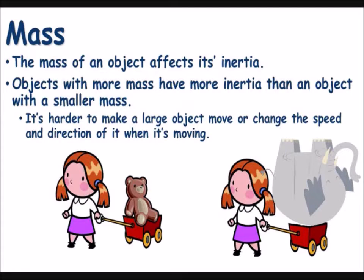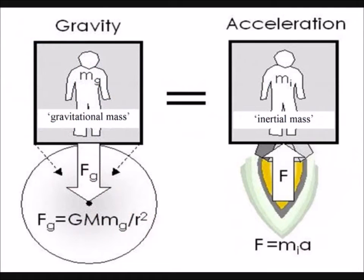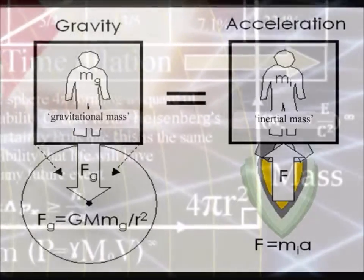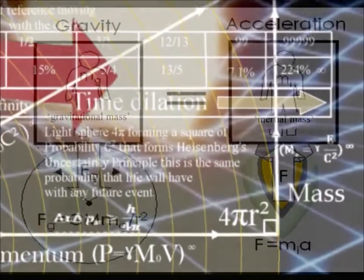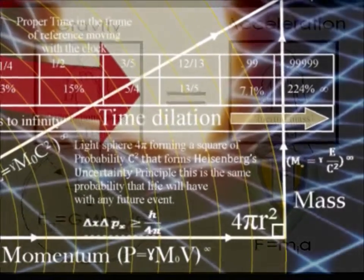Mass can be divided into two very different parts that seem to be unconnected. We have the inertial mass, in the form of Newton's second law of motion, and we also have gravitational mass, in the form of Newton's law of gravity.